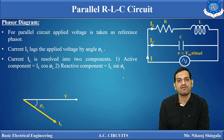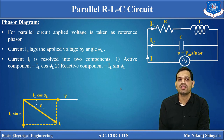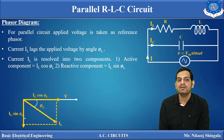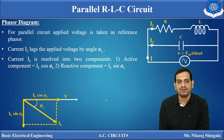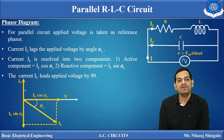We have already studied active and reactive components of current. The active component is IL cos φL, which is in phase with the applied voltage — so it is in the same direction as V. The other component is IL sin φL, which is in quadrature phase with the voltage. So these are the two components of IL, the current flowing through the RL branch. Another current is IC, the current flowing through the pure capacitor. For a pure capacitive circuit, current leads the voltage by 90 degrees. So IC will be in this direction, and this angle will be 90 degrees.